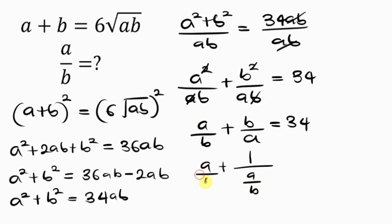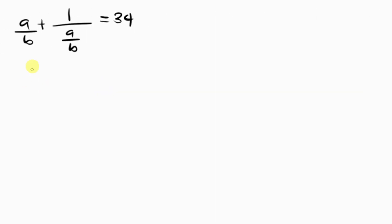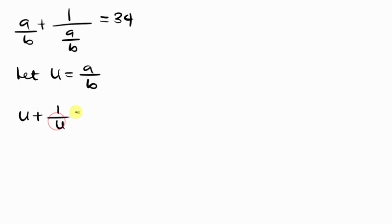So let u equal a over b. That means wherever I see a over b I substitute u, and wherever I see b over a I substitute 1 over u. This expression becomes u plus 1 over u equals 34.